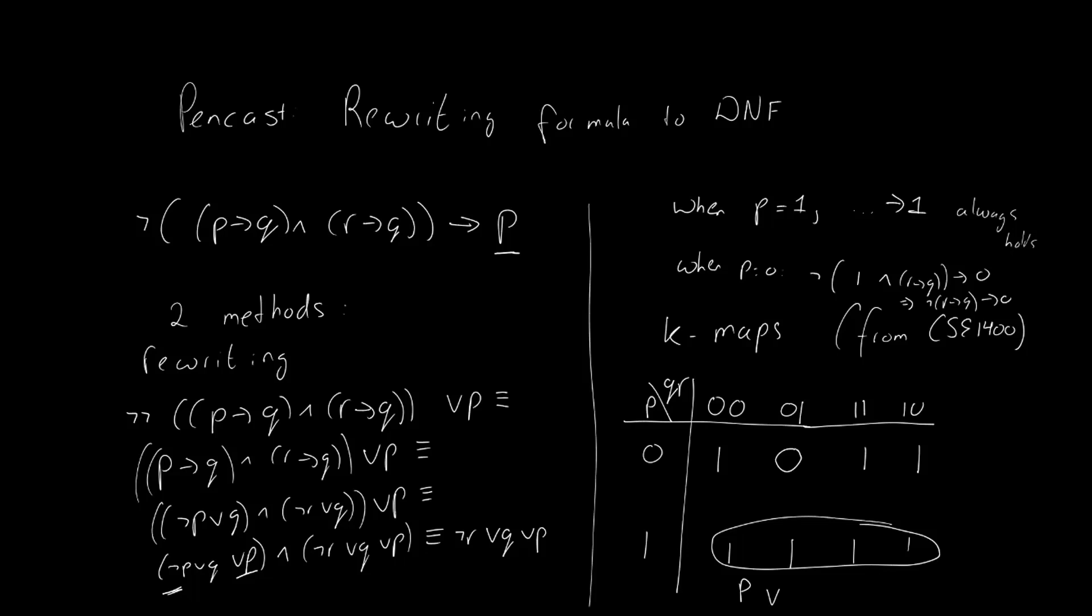We have a group with the four rightmost ones, which is the group for Q, because again, Q remains the same, but the other two variables change. And we have one group that is split, the two rightmost and the two leftmost ones. This is the group for not R, because again, not R remains constant, whereas P and Q change.